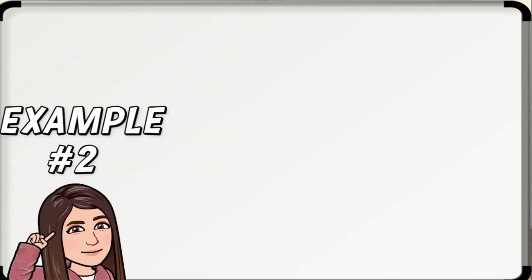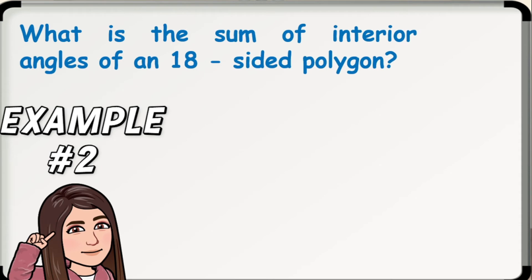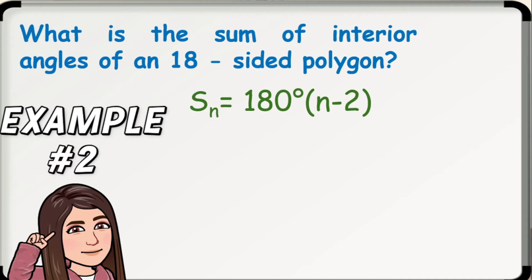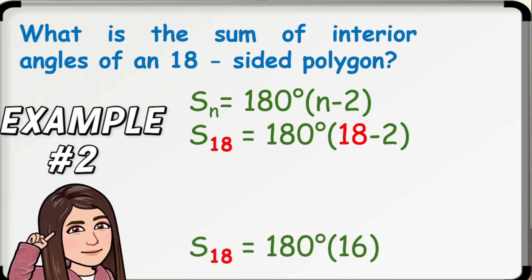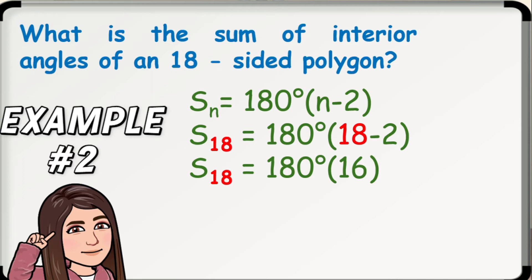Example number 2: What is the sum of interior angles of an 18-sided polygon? Using the formula S sub n equals 180 degrees times the quantity of n-2, and replacing n with 18, we have S sub 18 equals 180 degrees times the quantity of 18-2. Following the order of operations, we do first the operation inside the parentheses: 18 minus 2 is 16. Then, 180 times 16 gives us 2,880. Thus, the sum of interior angles of an 18-sided polygon is 2,880 degrees.